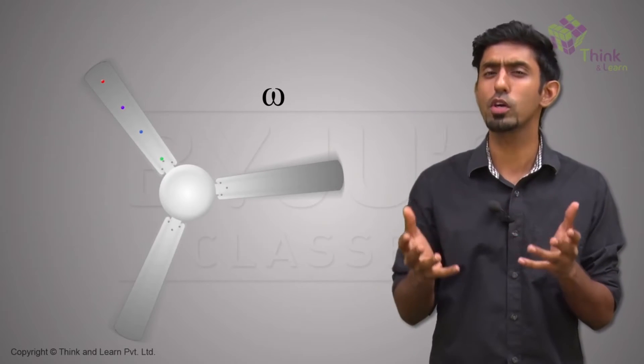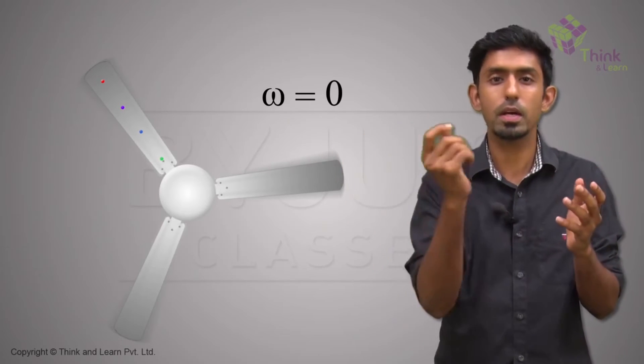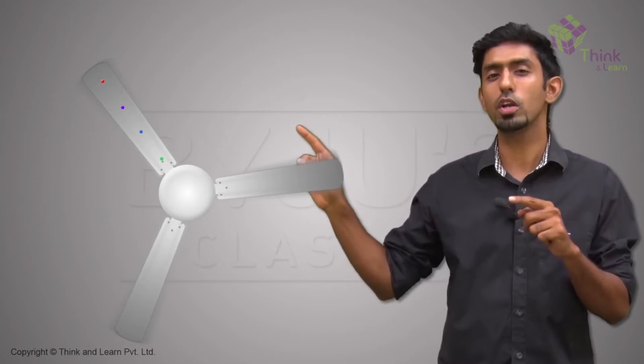If you look up at your fan when it's switched off, what is that common omega for all the points? Zero, right? None of them are covering anything. And once you switch it on, what happens?